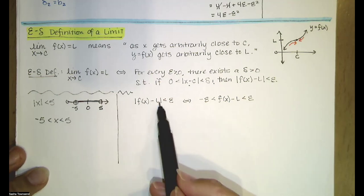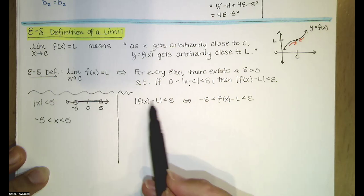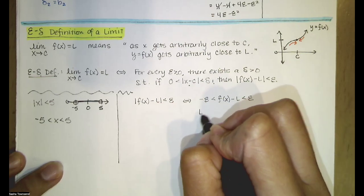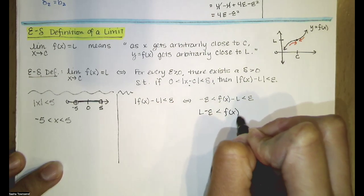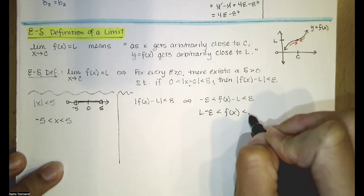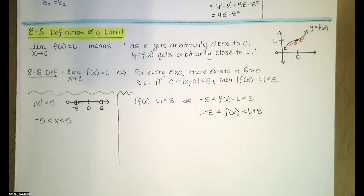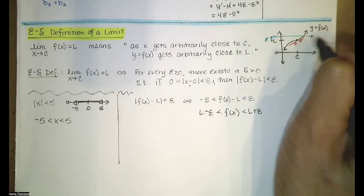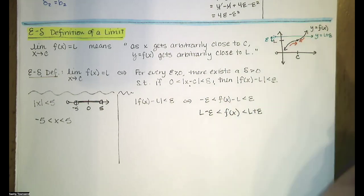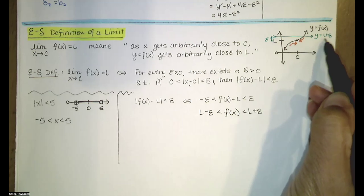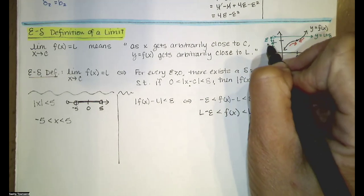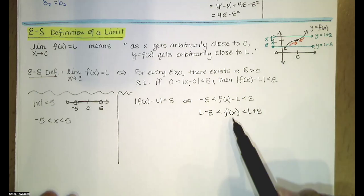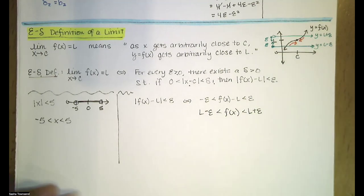In the same way, if I've got this absolute value less than epsilon, that means f(x) minus L has to be between negative epsilon and epsilon. Adding L to all three parts, we have that f(x) is between L minus epsilon and L plus epsilon. So if I draw a line y equals L plus epsilon and a line y equals L minus epsilon, our y values on the graph lie in between those two horizontal lines.